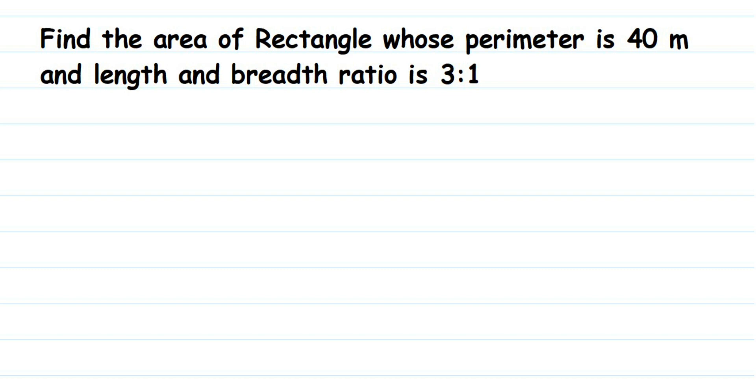Hello everyone, here's a question on rectangles. Find the area of a rectangle whose perimeter is 40 meters and length to breadth ratio is 3:1. They have given two things: one is the perimeter which is 40 meters, and second is the ratio of length and breadth which is 3:1.